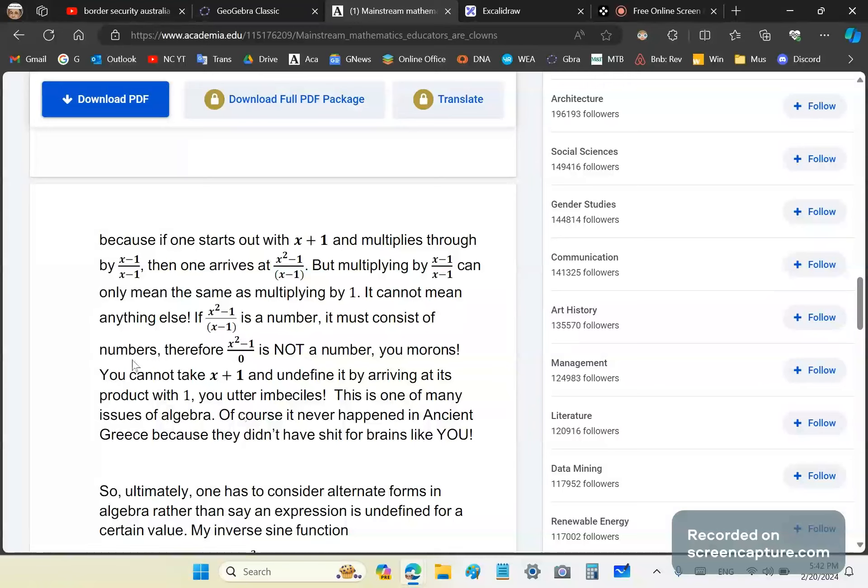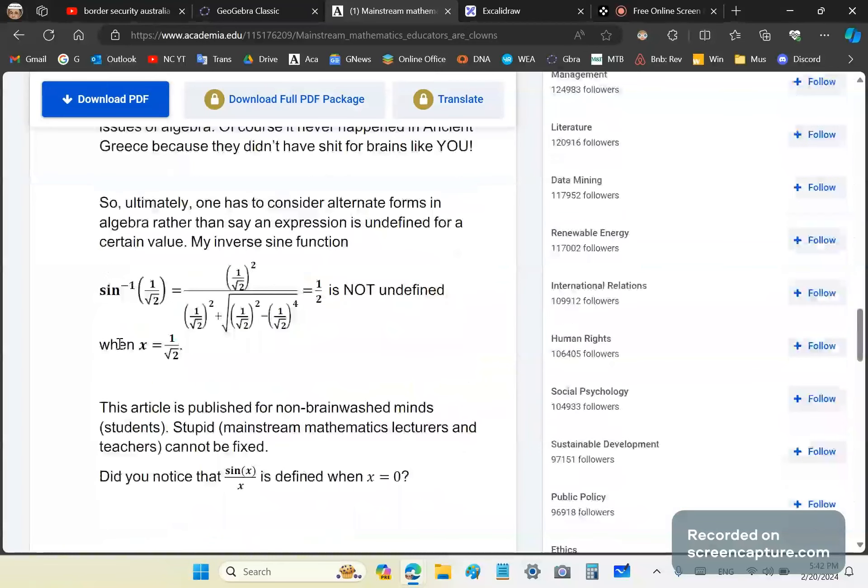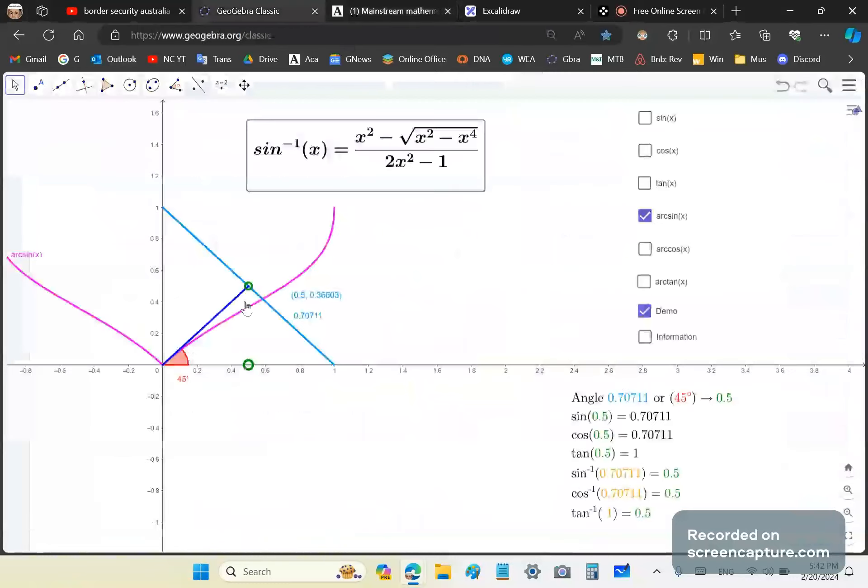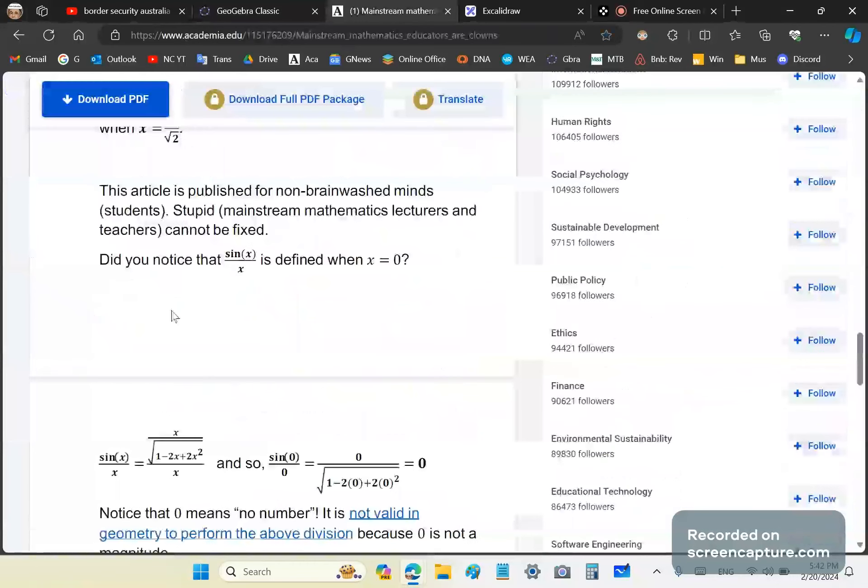That's one of the many issues of algebra. There are many more, by the way. And of course, this never happened in Asia and Greece because they didn't have zero magnitudes. So when you look at this sine arc sine function here, or inverse sine function, you'll see that it's defined when x is equal to one over square root two. And that makes perfect sense because it's just this blue line over this vertical line here.